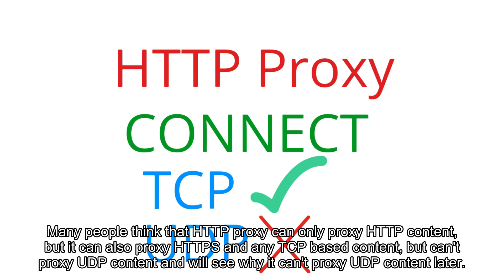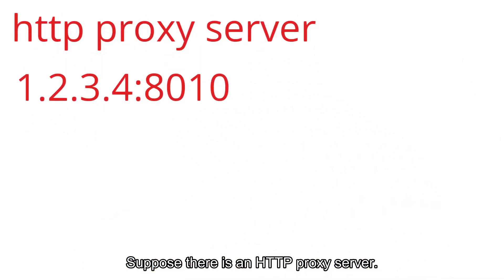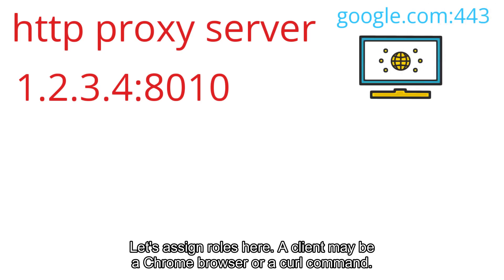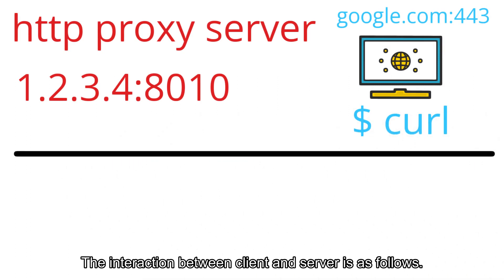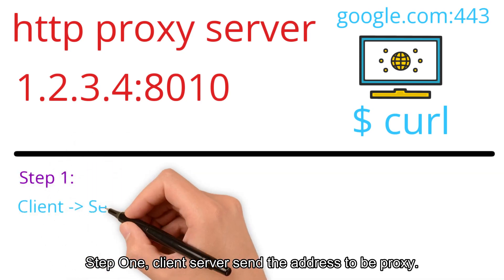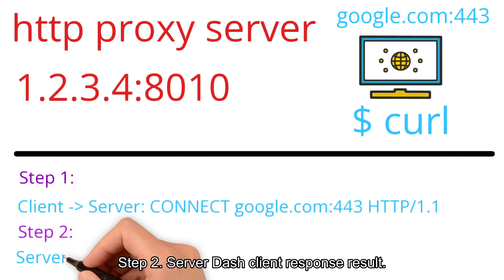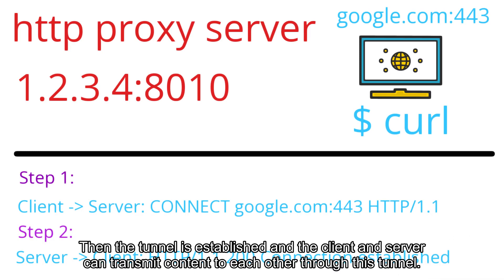We'll see why it can't proxy UDP content later. Suppose there is an HTTP proxy server and a client — which may be a Chrome browser or a curl command. The interaction between client and server is as follows. Step 1: the client sends the address to be proxied to the server. Step 2: the server responds with a result. Then the tunnel is established, and the client and server can transmit content to each other through this tunnel.